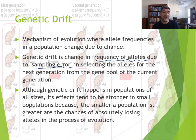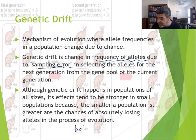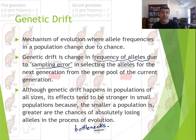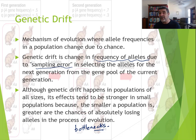Genetic drift happens in populations of all sizes, but the effects tend to be stronger in smaller populations. We've talked about the idea of bottlenecks, where populations get very low, and any genetic drift in that situation can massively change the proportion of particular alleles. The smaller the population, the greater the chance of alleles being lost altogether — through processes that don't necessarily relate to natural selection.